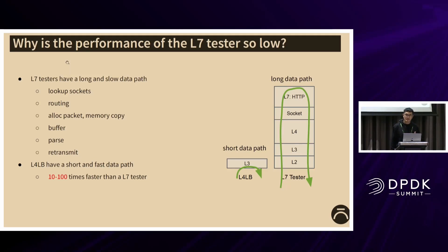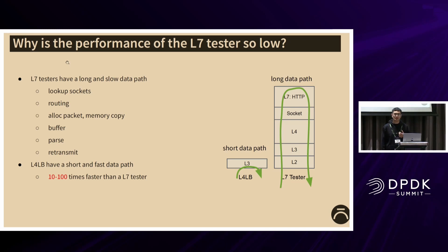These tools mentioned above are called layer 7 testers. Why is the performance of the layer 7 tester so low, and why is the performance of the L4LB so high?